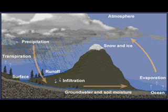Water in different forms cycles continuously throughout the lithosphere, hydrosphere, atmosphere, and biosphere. Water evaporates into the atmosphere from the land and the sea. Plants and animals use and reuse water and release water vapor into the air. Once in the air, water vapor circulates and can condense to form a cloud, and precipitation falls back to Earth.